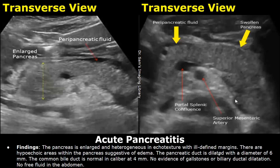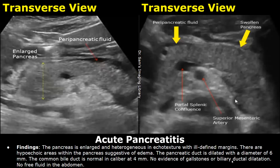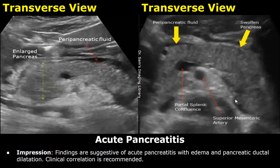After that, you can write whether the pancreatic duct is dilated or not. In this example, it was dilated with a diameter of 6 millimeters. Then you can write about the common bile duct, and after that you can write about gallstones or biliary duct dilation. The impression: findings are suggestive of acute pancreatitis with edema and pancreatic ductal dilation. Clinical correlation is recommended, because a diagnosis is not entirely done on ultrasound alone.